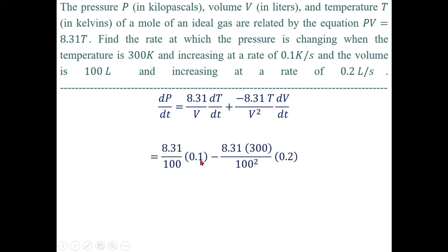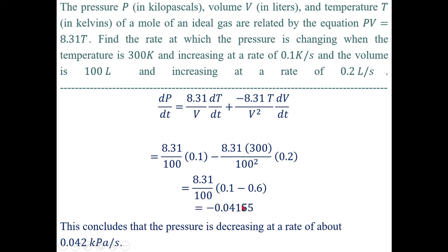Substituting: dT/dt = 0.1, dV/dt = 0.2, V = 100, T = 300. After simplification, dP/dt ≈ −0.042 kPa per second. The negative sign indicates a decreasing pressure. This concludes that the pressure is decreasing at a rate of about 0.042 kPa per second.